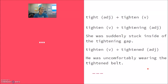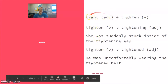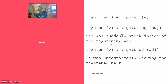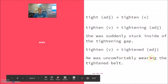Another example of a difficult piece: tight is the adjective. Taking EN for the verb tighten. Remember that ING is sometimes continuous — I am tightening the bottle — but sometimes the ING is doing the job of an adjective. For example, the tightening gap: she was suddenly stuck inside of the tightening gap — the gap was being made tight. He was uncomfortably wearing the tightened belt, where ED is doing the job of an adjective.